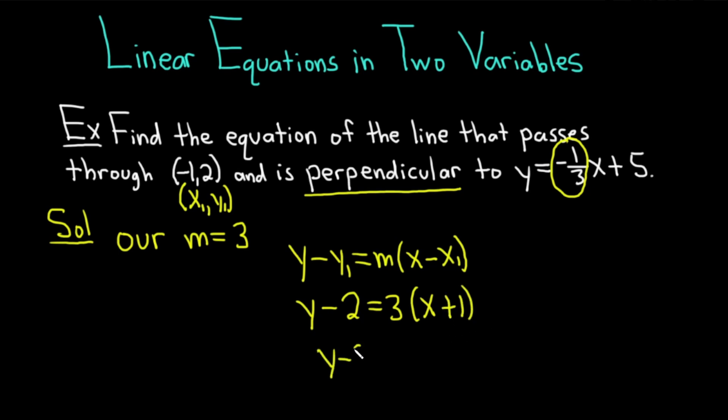So we have y - 2 = 3(x + 1). That's 3x and 3 times 1 is 3. We just add 2 to both sides, so plus 2 plus 2. We end up with y = 3x + 5.